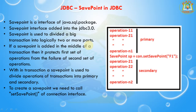SavePoint is an interface of the java.sql package. SavePoint interface was added into JDBC 3.0 — it is not available before JDBC 3.0. SavePoint is used to divide a big transaction into two or more logical parts.